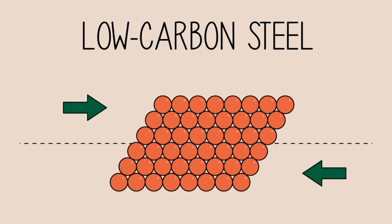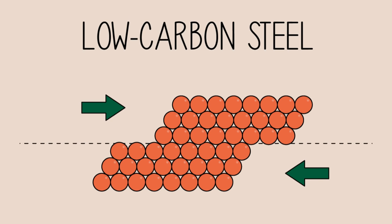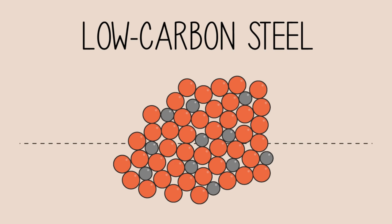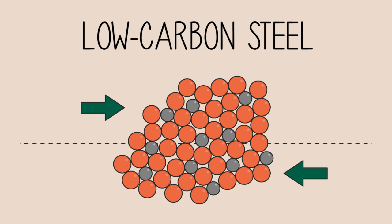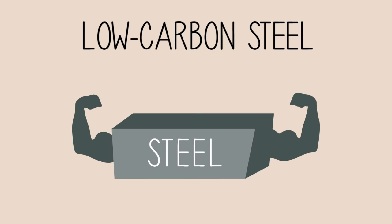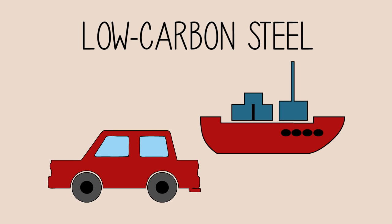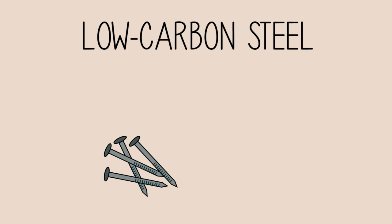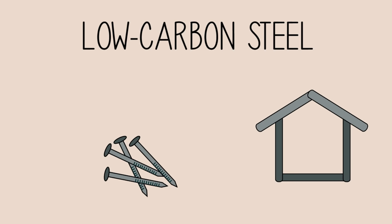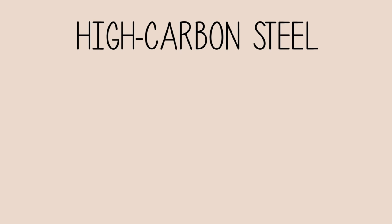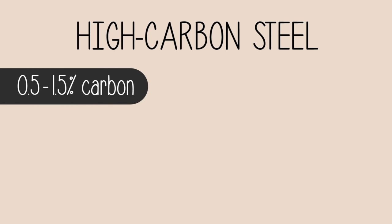When a force is applied to a metal, the metal ions slide over one another. If we insert carbon atoms into this metallic structure, it will be harder for the metal ions to slide over one another, thereby strengthening the overall structure. Mild steel is used to make the outer bodies of cars and ships, nails, many building materials, and even bridges. High-carbon steel can contain anywhere from 0.5% to 1.5% carbon.